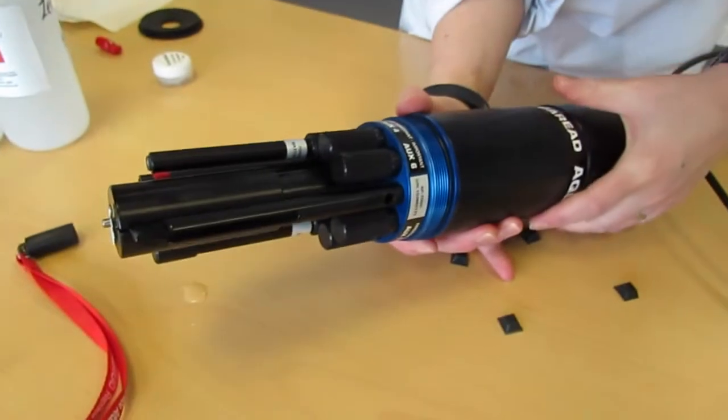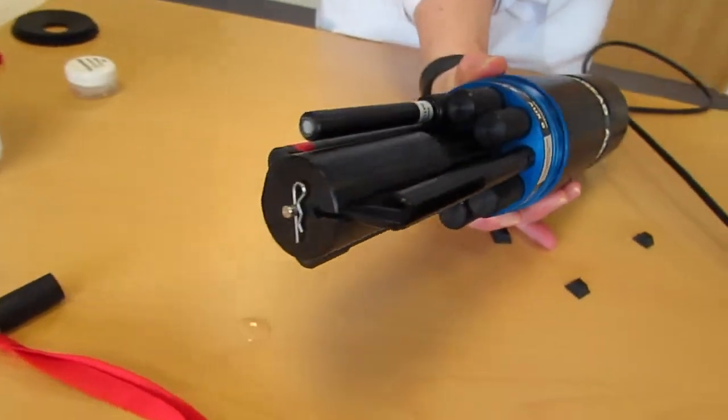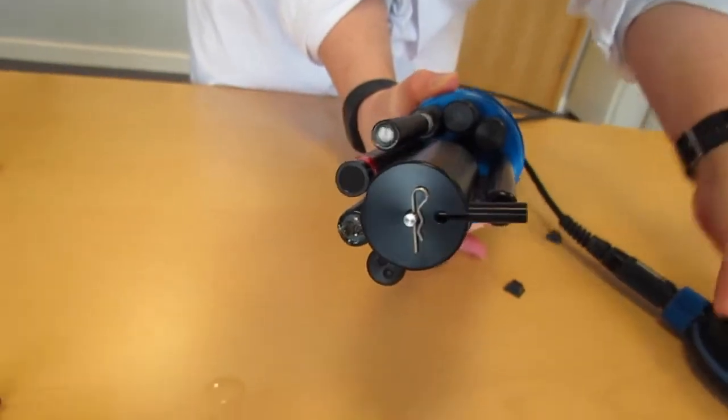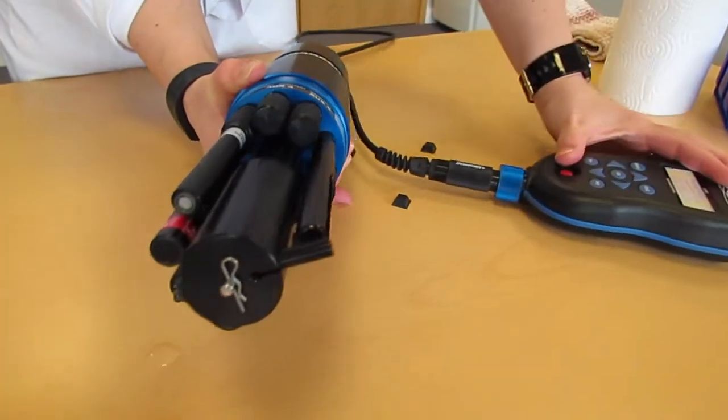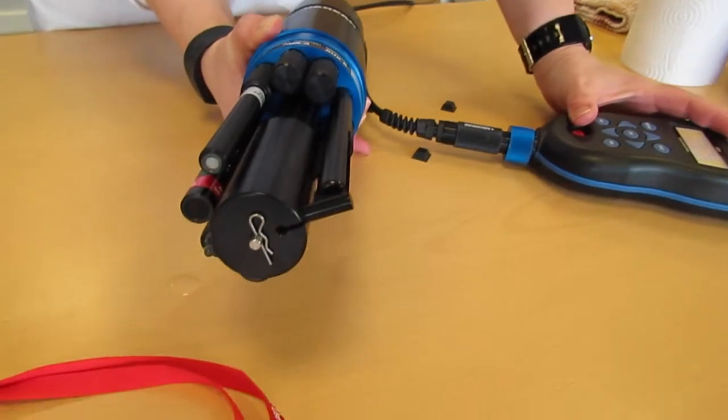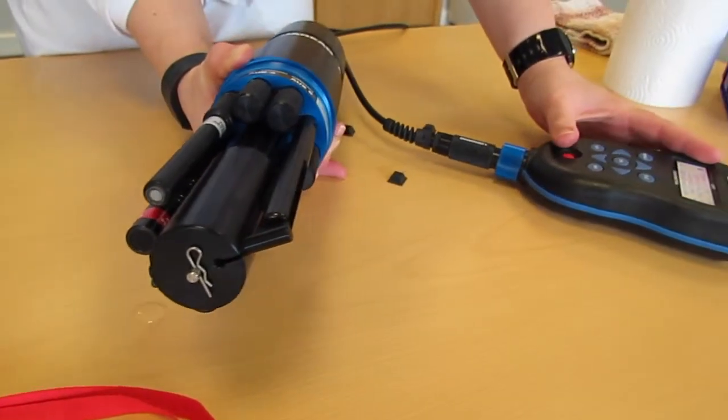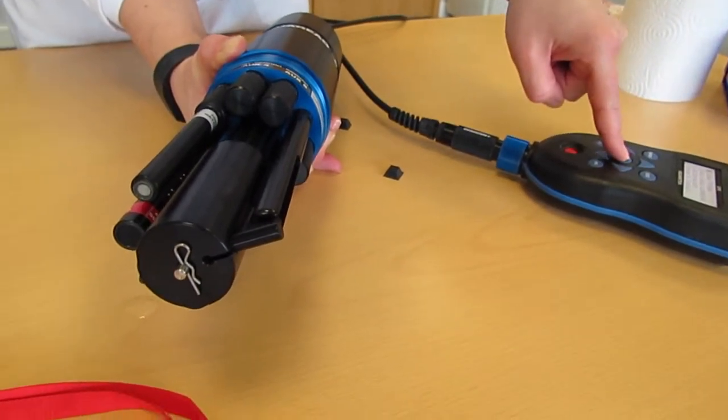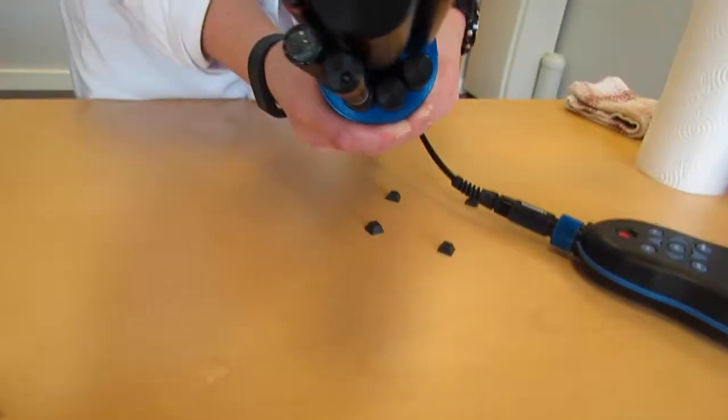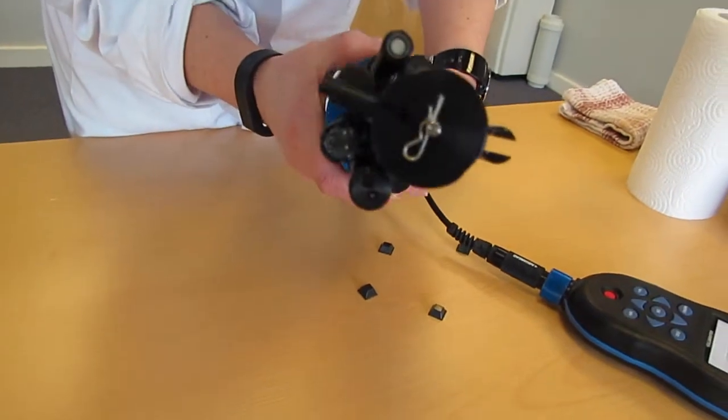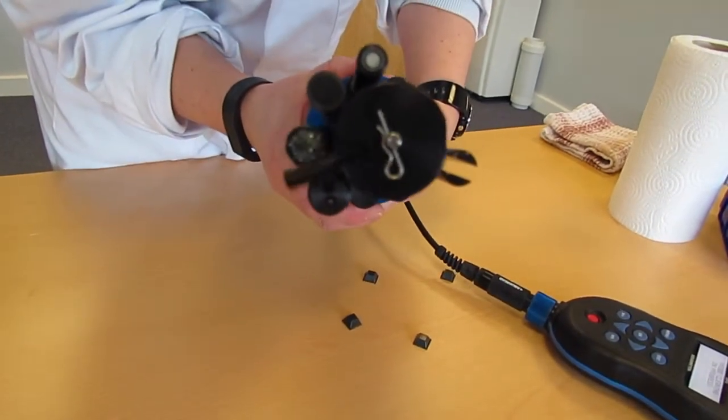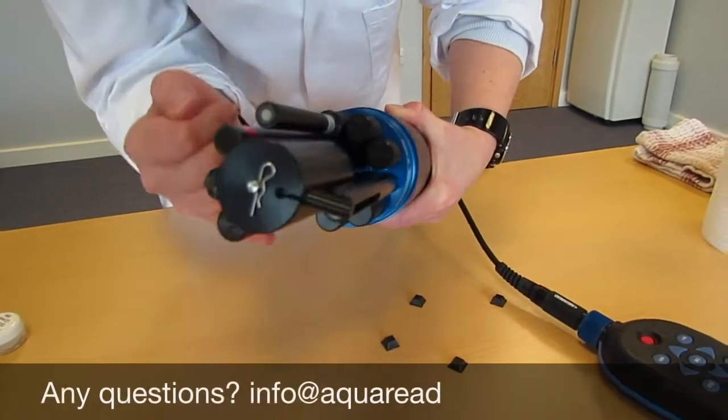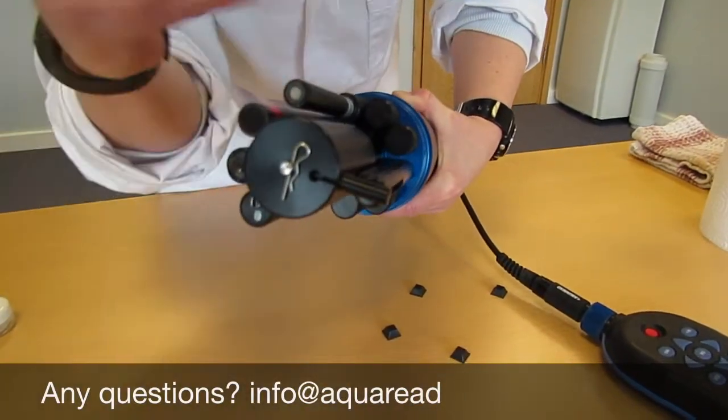We can now check whether the wiper arm is cleaning properly by turning on the meter. If we go to menu and clean probe on the meter, then we will see that it is cleaning all of the terminals. And as we have assigned aux 1 and aux 2, it is also cleaning these sockets, but not the ones that we haven't assigned.